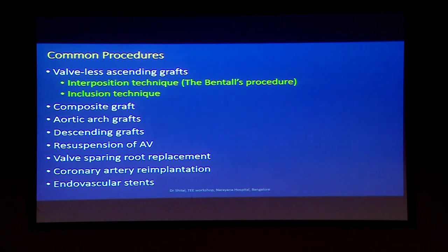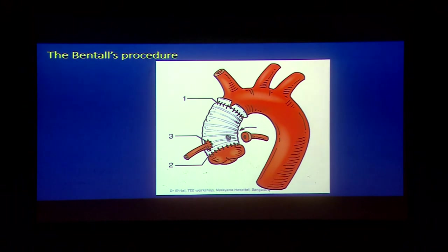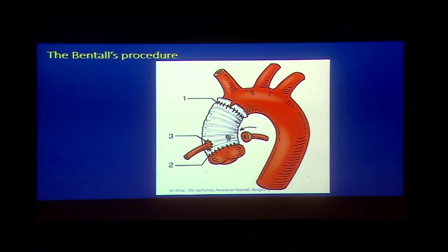Common procedures these patients will have: valveless ascending grafts, composite grafts, aortic arch grafts, and less commonly elephant's trunk. The Bentall procedure or modified Bentall — currently the standard technique — includes removal of the diseased segment and replacement with Dacron grafts. The proximal side is often at the supra-coronary ST junction, the distal side is just proximal to the brachiocephalic artery. Arrows show implantation of the coronary buttons, and sites 1, 2, and 3 are potential sites for development of pseudoaneurysms later on.